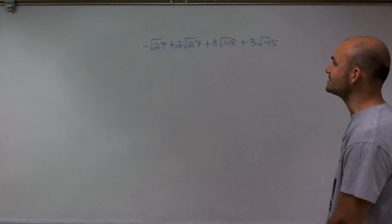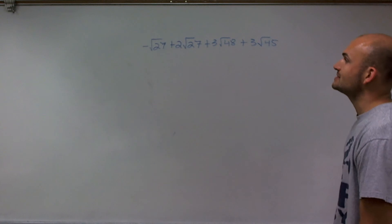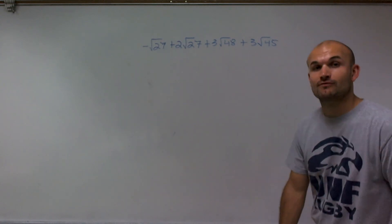We have negative square root of 27 plus 2 square root of 27 plus 3 square root of 48 plus 3 square root of 45.